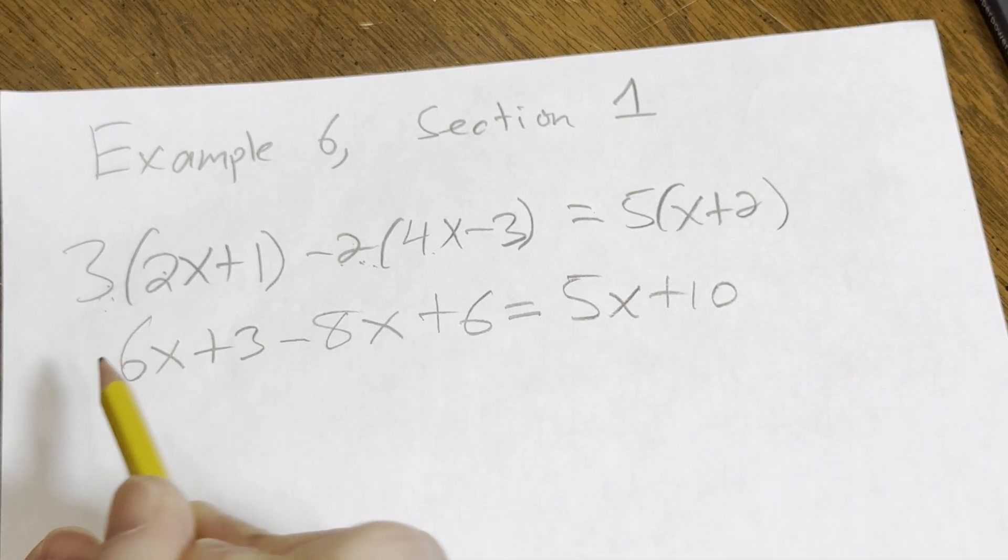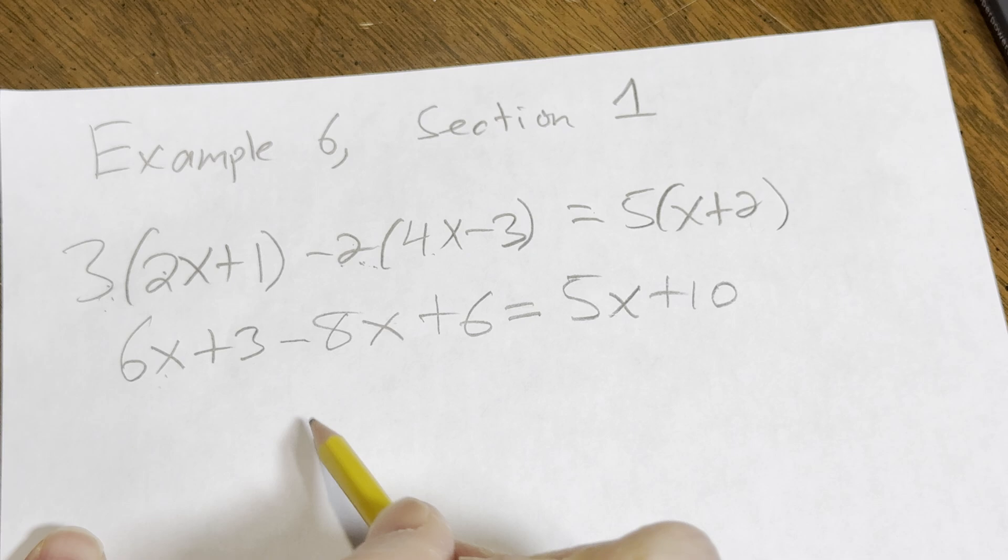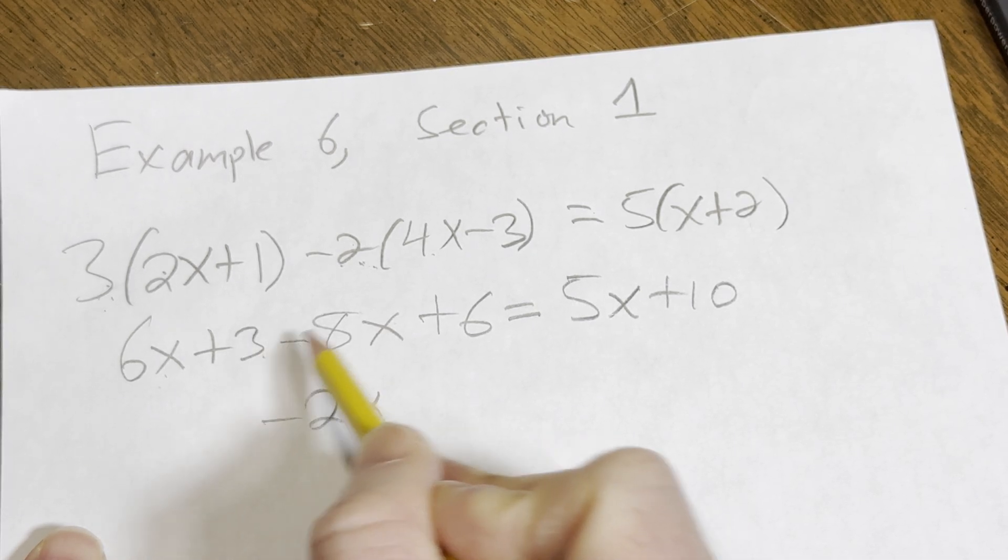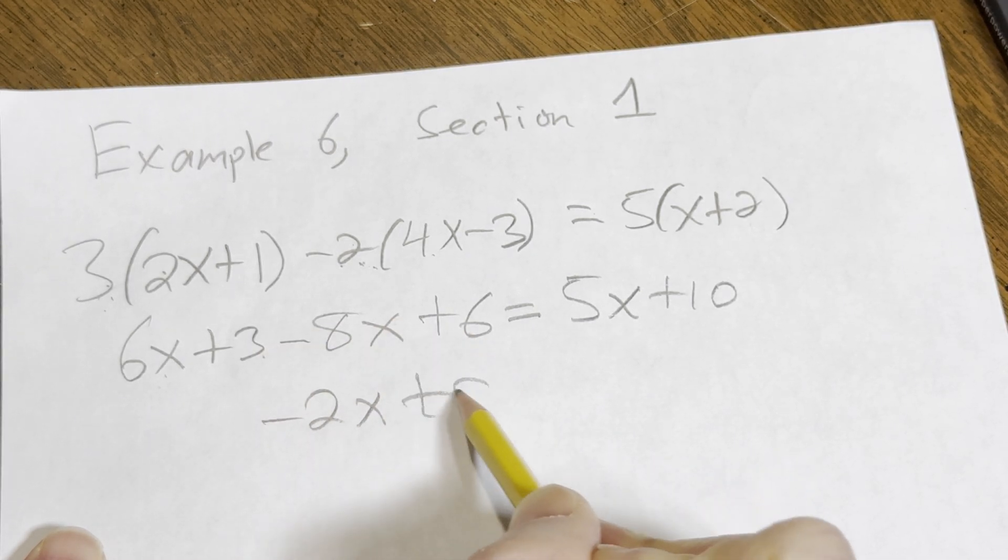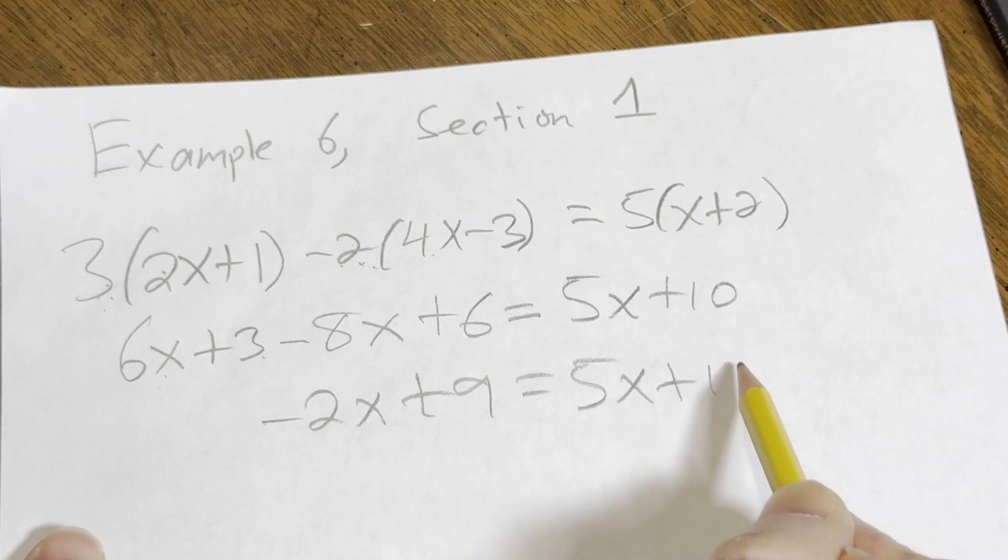Good stuff. This is nice because 6x minus 8x is minus 2x, and three plus six is nine. And this is equal to 5x plus ten.